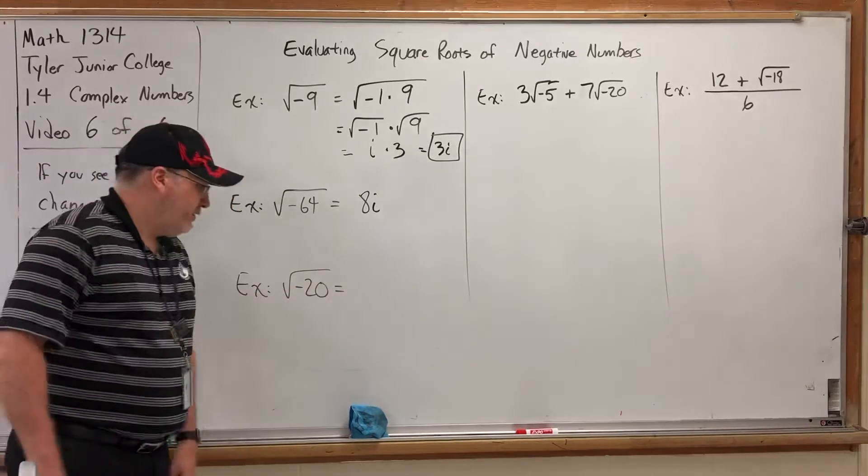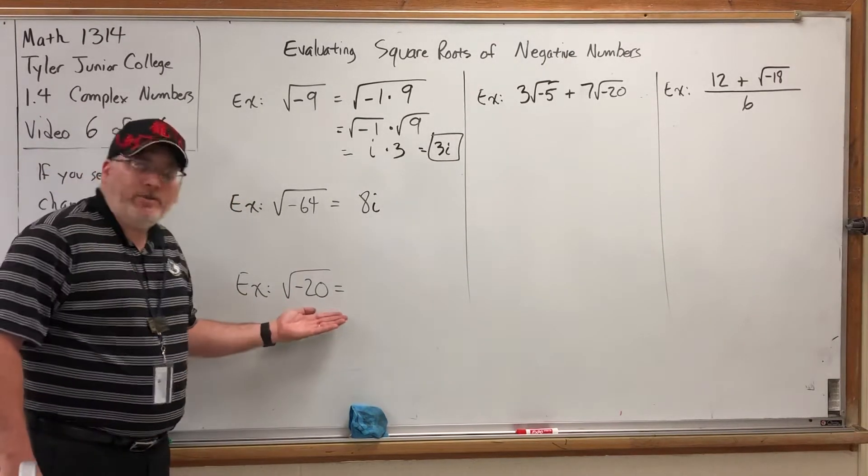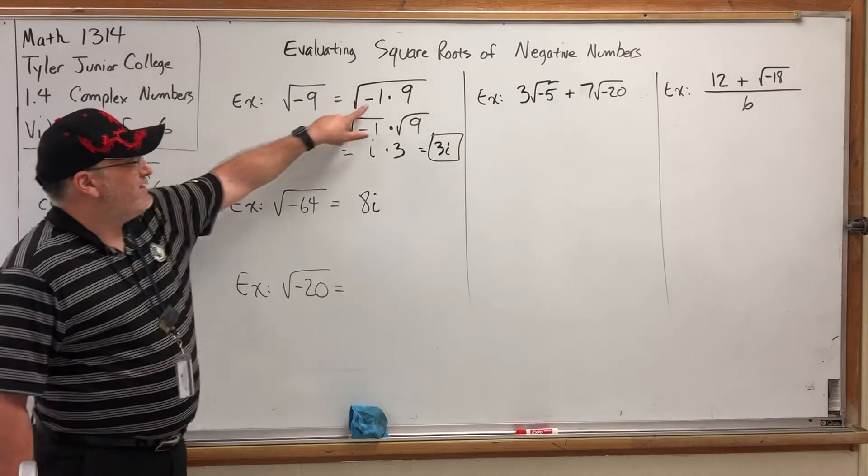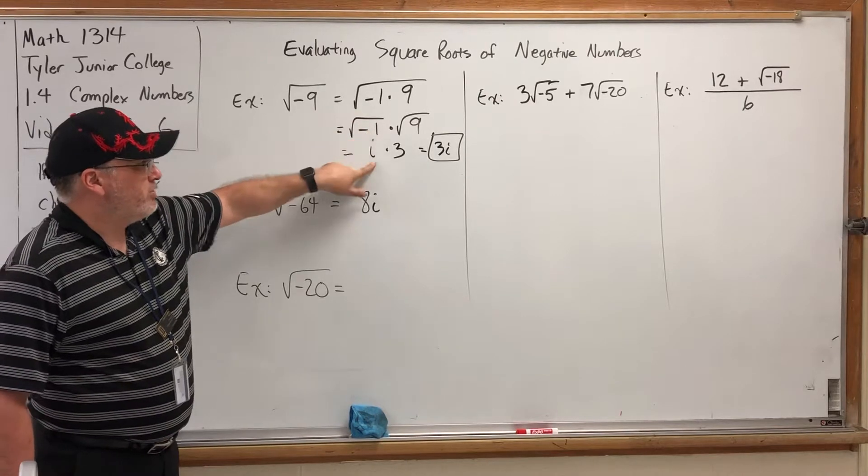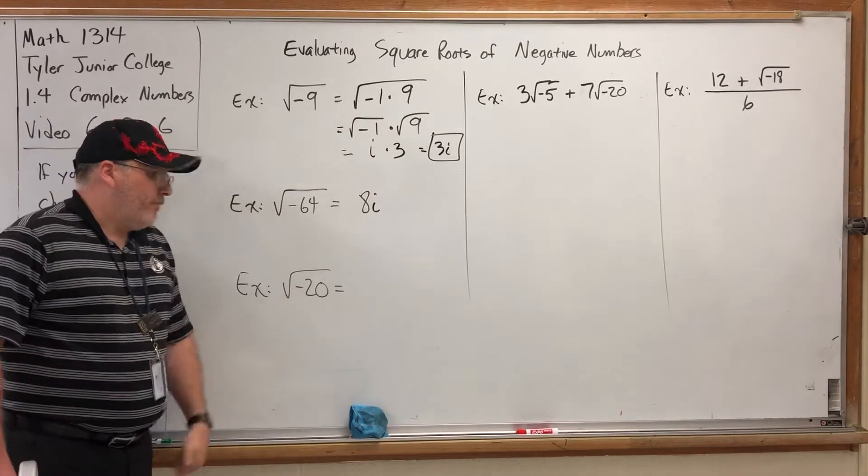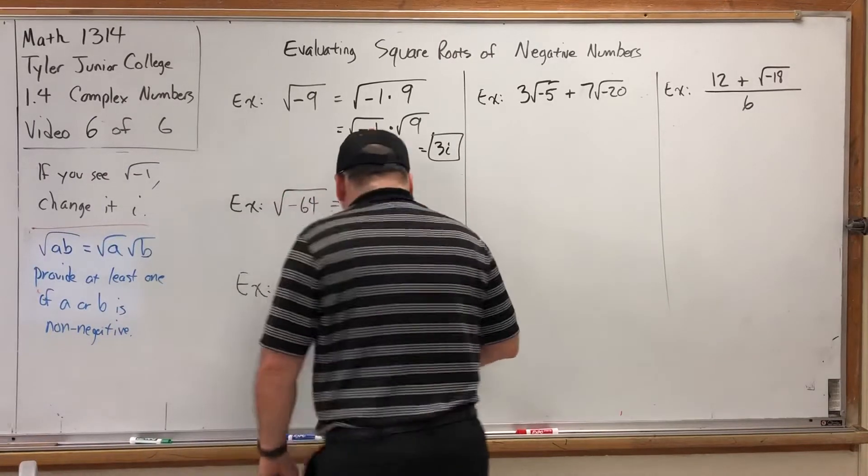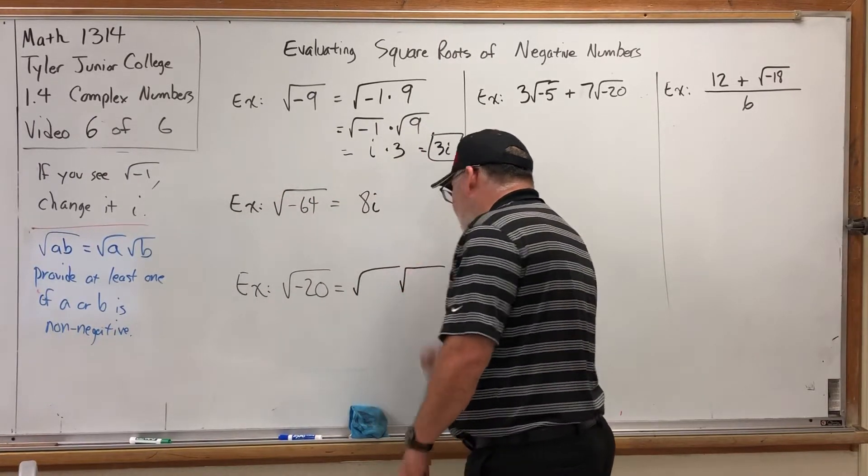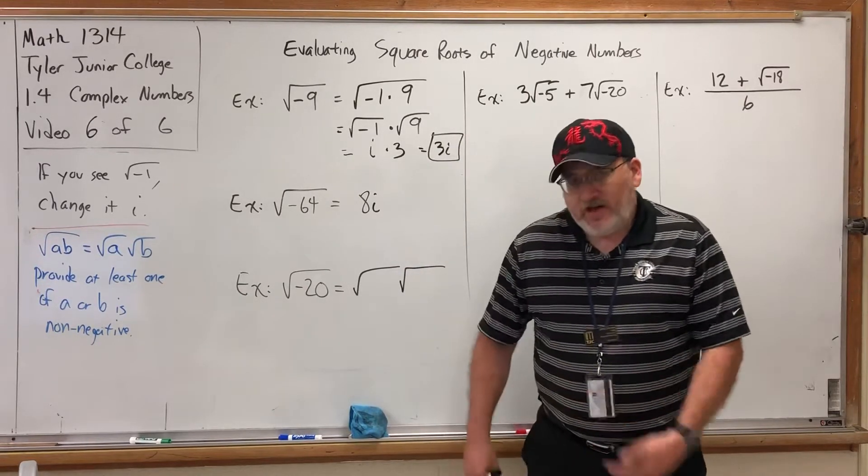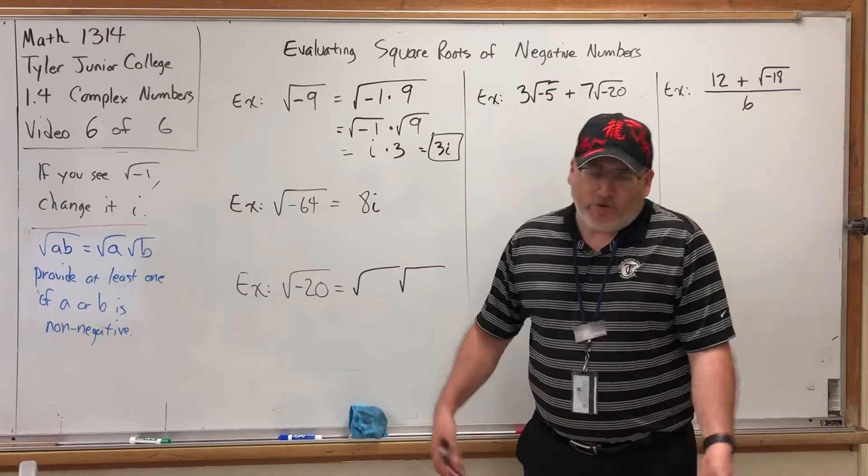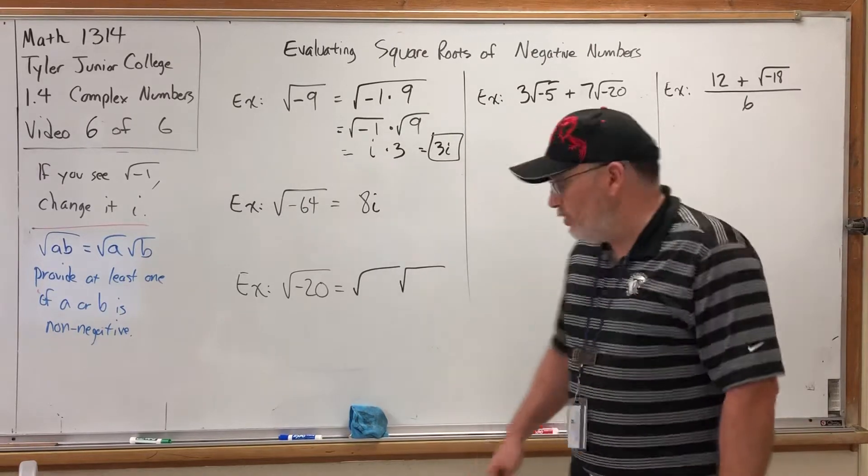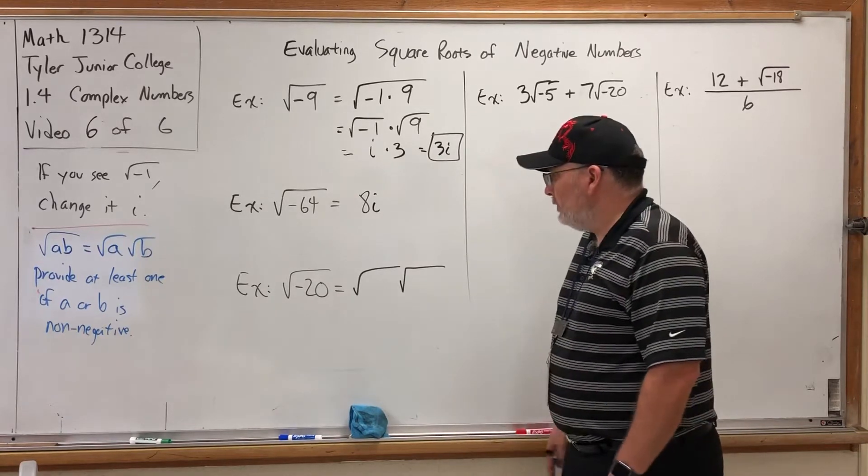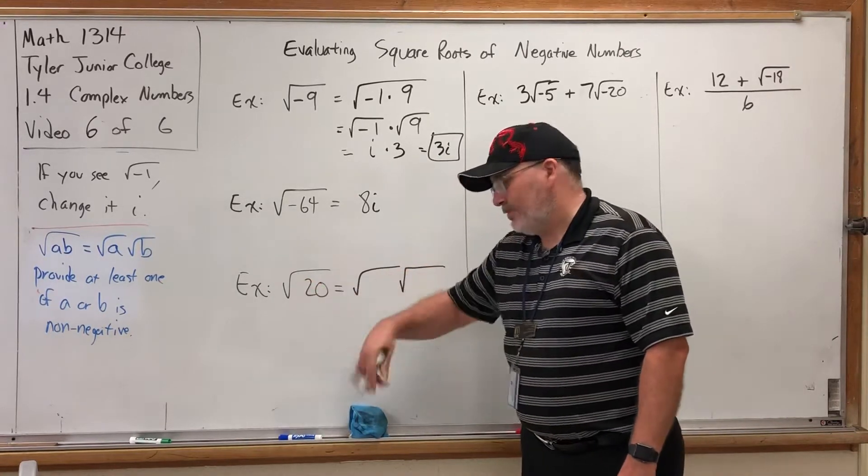What's the square root of negative 20? We have a different problem now. And it's not the negative. I know what to do with the negative now. At the very minimum, I can split it off as a negative 1, put it under its own square root, and turn it into an i. The problem here is actually the 20. So let's fiddle with the 20 for a second. A skill that I want you to have coming into this class is simplifying square roots of numbers. For example, let's get rid of the negative for a second. We'll put it back in in a moment.